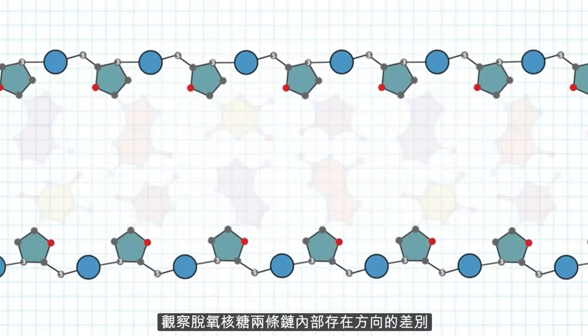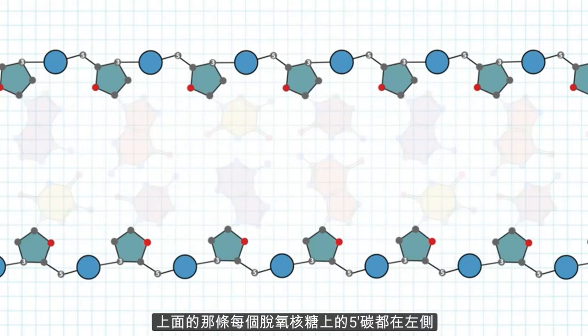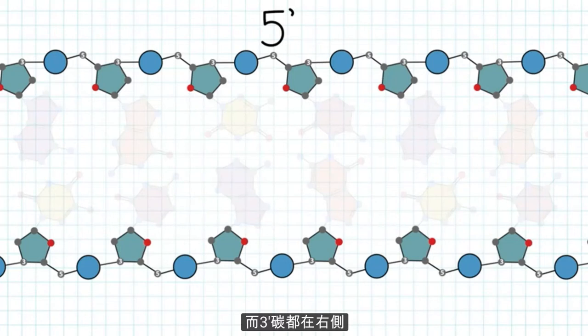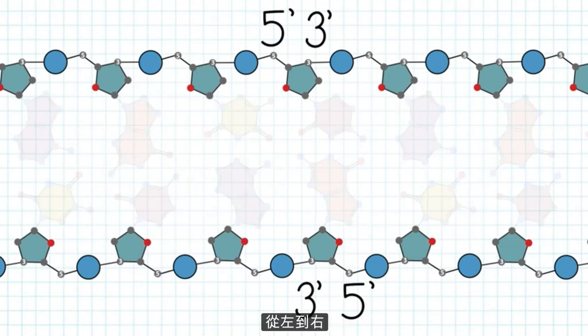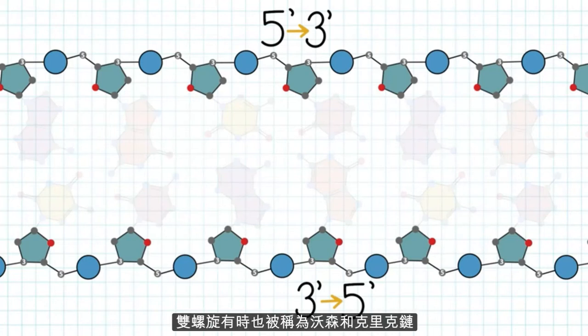Looking within the sugars, there is an intrinsic orientation difference between the two strands. On the top strand, you can see that the 5' carbon of each sugar is on the left, and the 3' carbon is on the right. The opposite is true for the bottom strand. Reading left to right, that makes the top strand orientation 5' to 3', and the bottom strand orientation 3' to 5'. These strands are also sometimes called Watson and Crick.